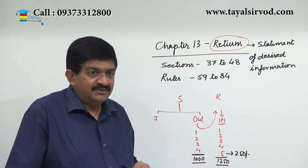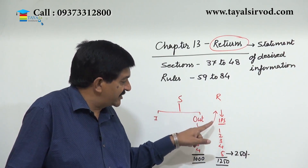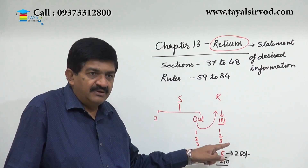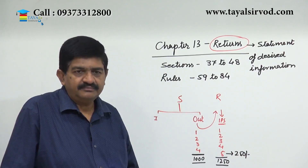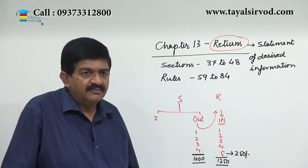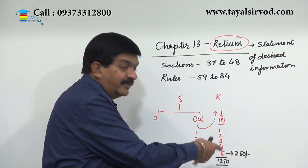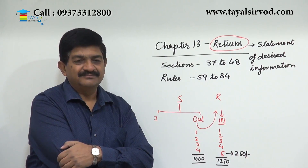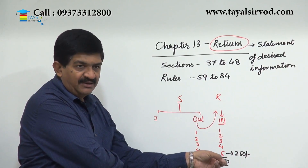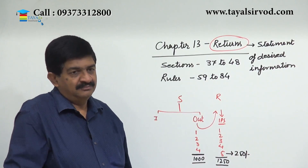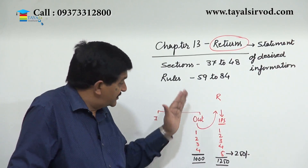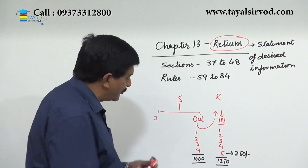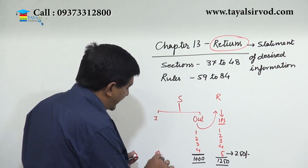When the recipient declares that he has received supplies one, two, three, four plus five from the supplier, the government tells the recipient to take credit of 250 also. Then the government brings to the knowledge of the supplier that the recipient is saying he has received supply number five also from the supplier. The supplier may accept that yes, there is a mistake, and then adds supply number five, paying another 250 rupees.